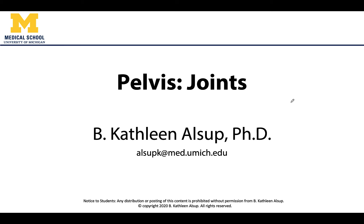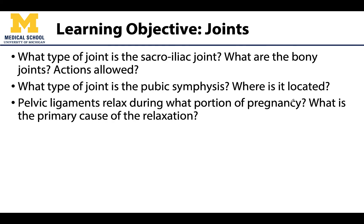Hello anatomy friends, this is Dr. Alsup. Now that we have a pretty good understanding of what the bones are that make up the pelvic girdle, we can talk about where these bones articulate and what joints are going to be formed. The two main joints we are going to discuss are the paired sacroiliac joints and the pubic symphysis, which is found in the midline region.